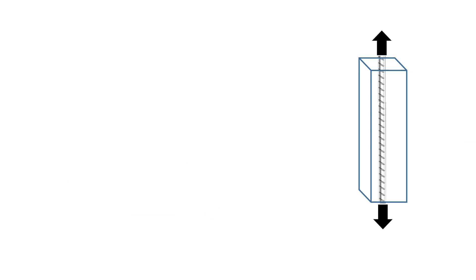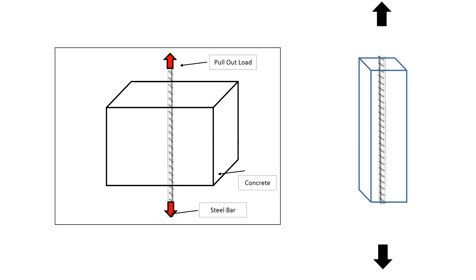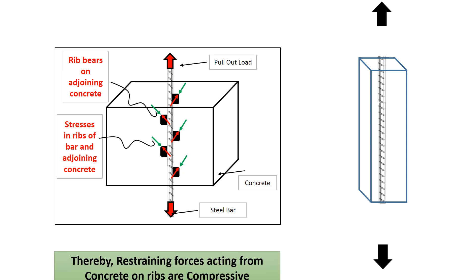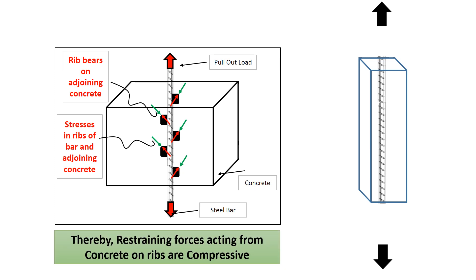Bond behavior of concrete and steel can be understood by applying a pullout load on a steel bar which is embedded in concrete. A pullout load leads to the development of stresses in steel parts. The steel parts have ribs, and these start bearing on surrounding concrete due to the action of the pull. The green colored stresses in the adjoining figure can be seen — these are the restraining compressive forces acting from concrete on the ribs.